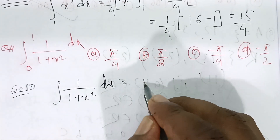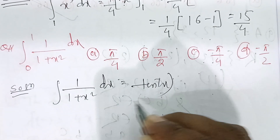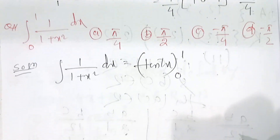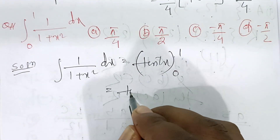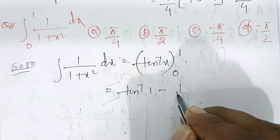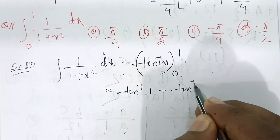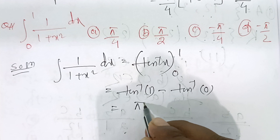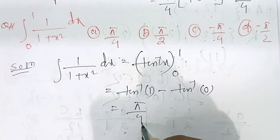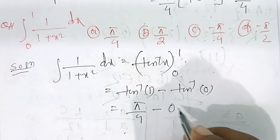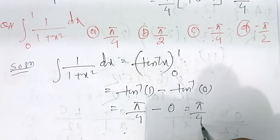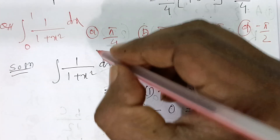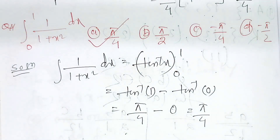The integral of 1 by (1 + x²) dx is tan inverse x. Applying the limit 0 to 1: tan inverse 1 minus tan inverse 0, which gives π/4 minus 0 equals π/4. So, option A is the answer.